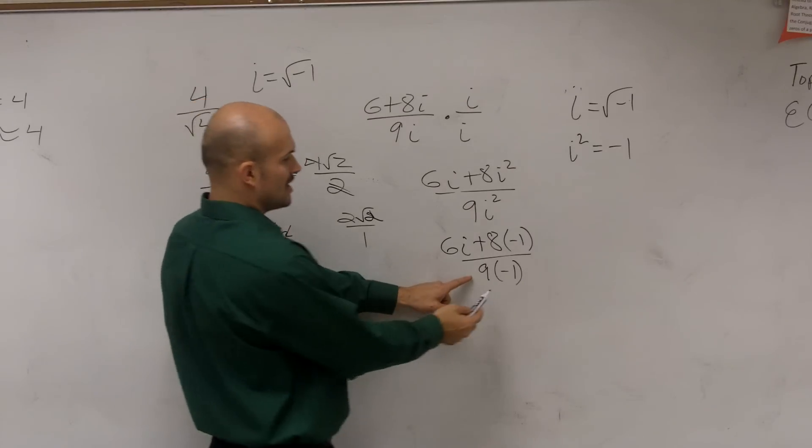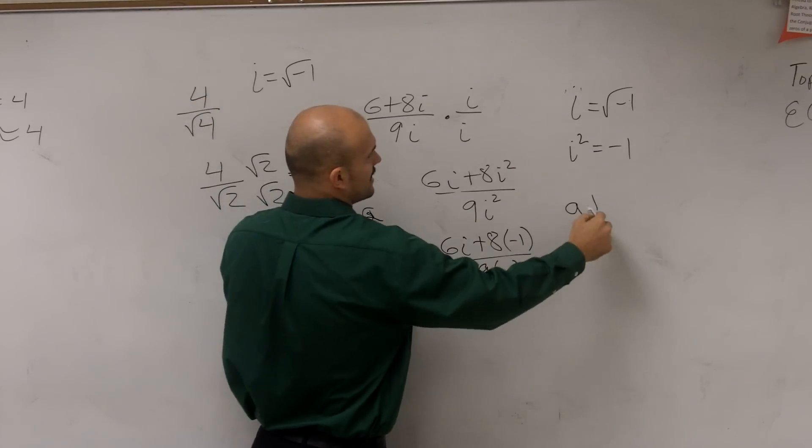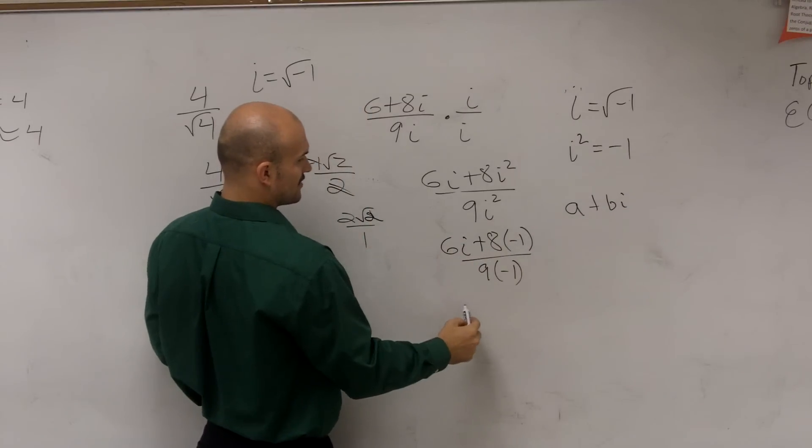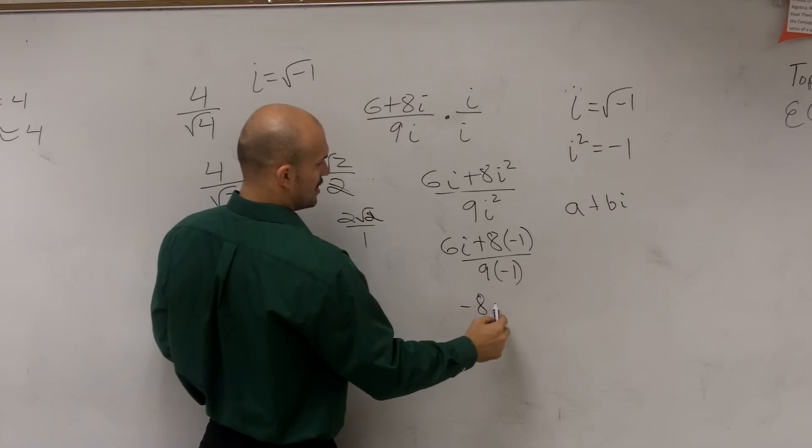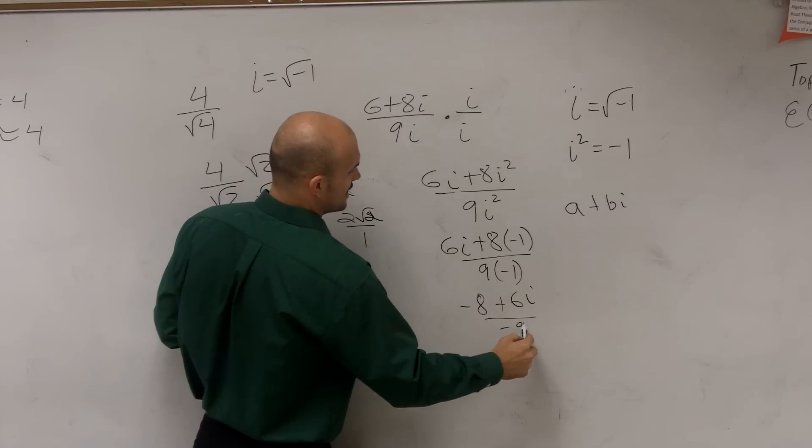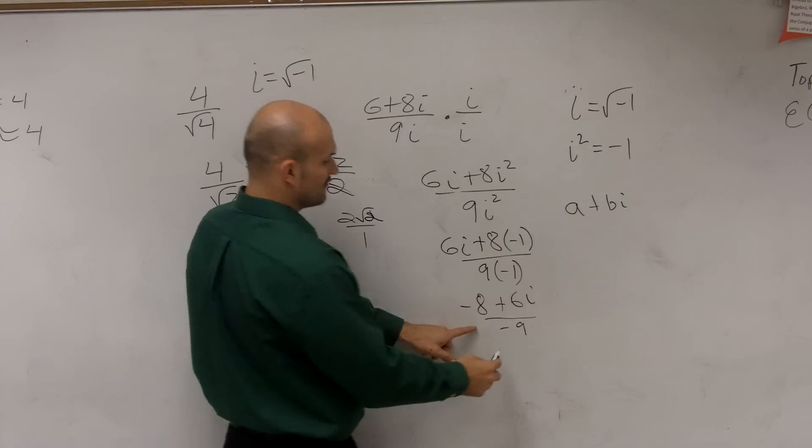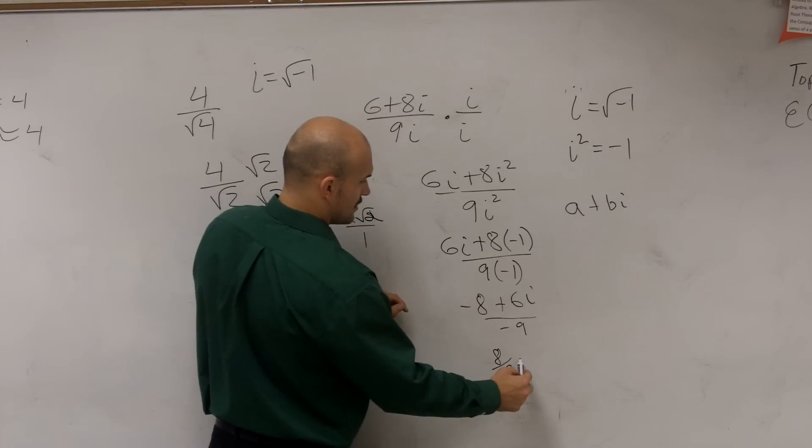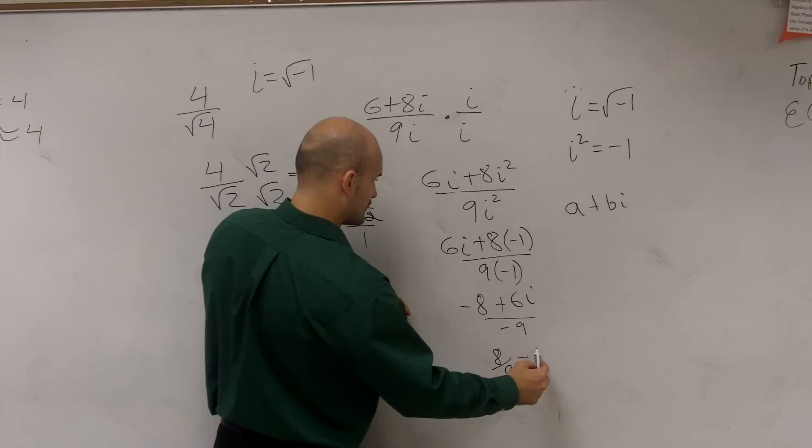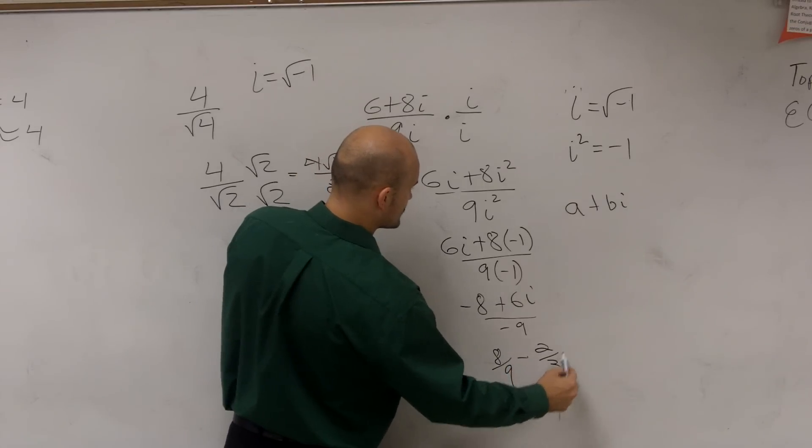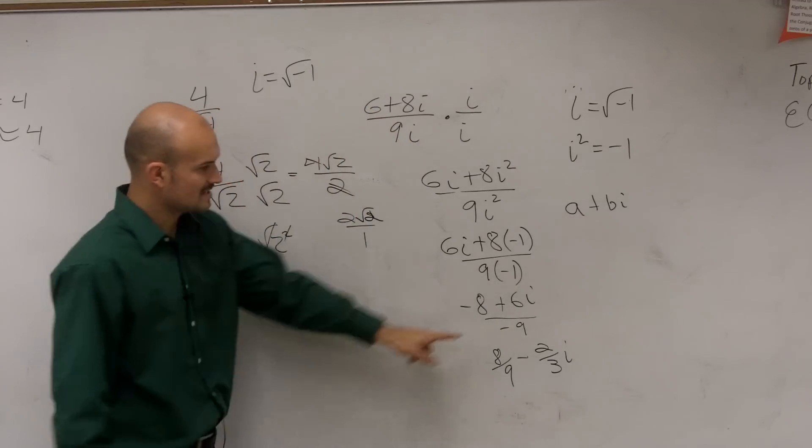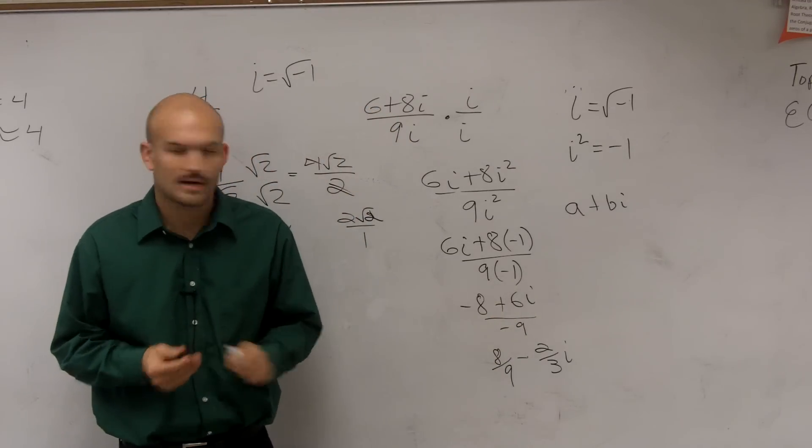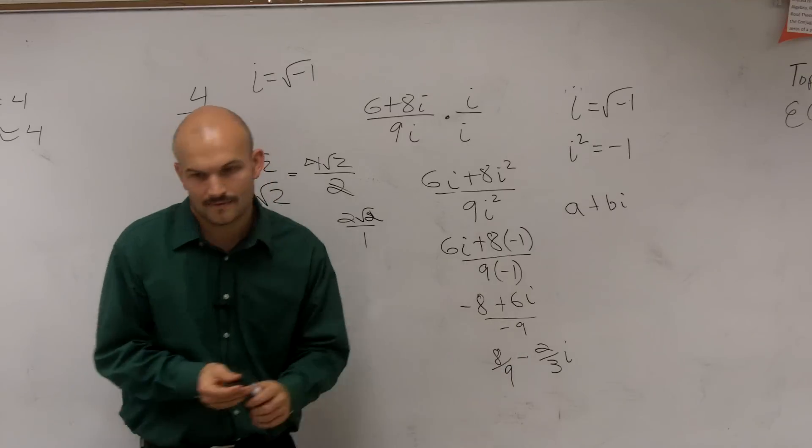Now, lastly, the same thing is, I also want to make sure that I always write it in a and bi form. So, therefore, I'm going to write this number in front. So I'm going to have negative 8 plus 6i divided by negative 9. Then I'm going to simplify this fraction to 8 ninths minus, let's see, 2 thirds i. Because I divide the 9 into my front and my last term. So, therefore, it's a plus bi. There you go.